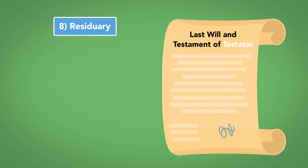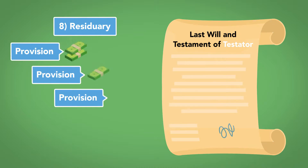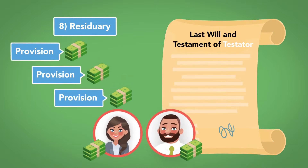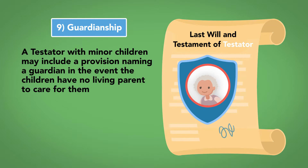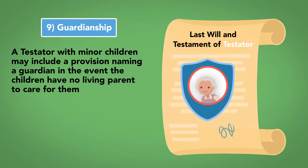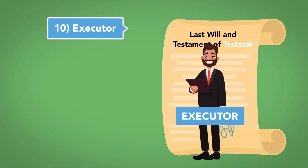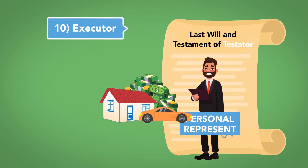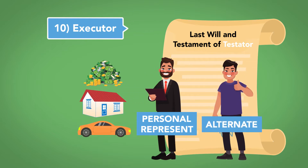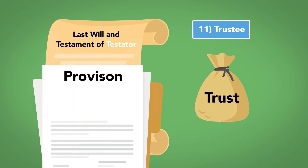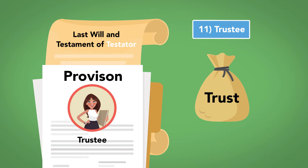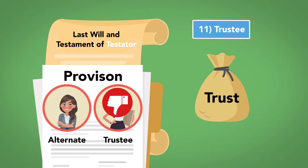Number 8: Residuary Clause. The Residuary Clause distributes to the named residuary beneficiaries all of the remaining property of the estate not otherwise disposed of by previous will provisions. Number 9: Guardianship. A testator with minor children may include a provision naming a guardian in the event the children have no living parent to care for them. Number 10: Executor. A will should name an executor or personal representative who will be responsible for the administration of the estate, along with at least one alternate in the event that the named executor is unable to perform his duties. Number 11: Trustee. If the will creates a trust, it will also include a provision naming at least one trustee — the person who will manage the trust — as well as at least one alternate trustee in the event that the named trustee can no longer serve.